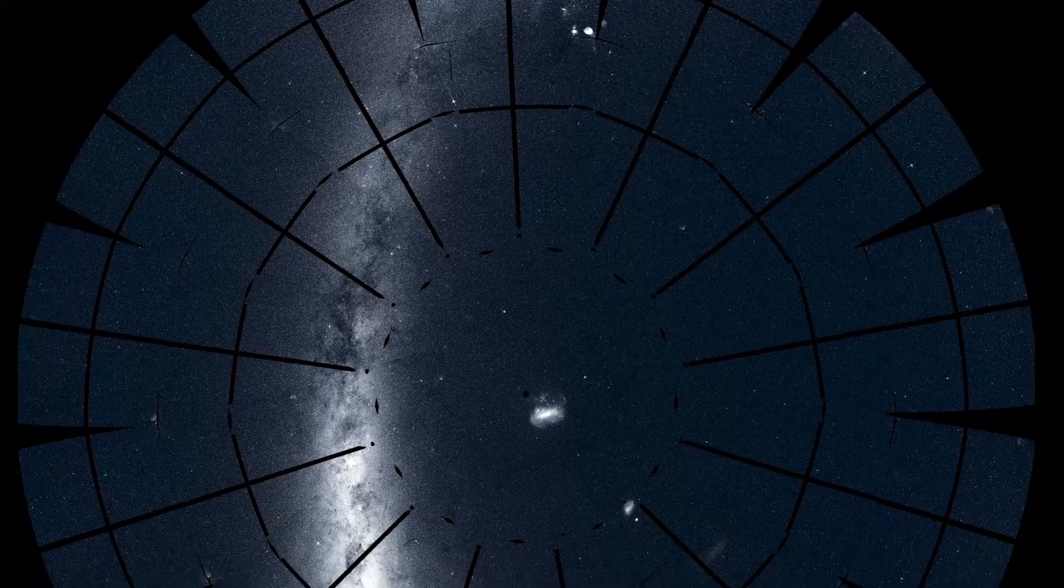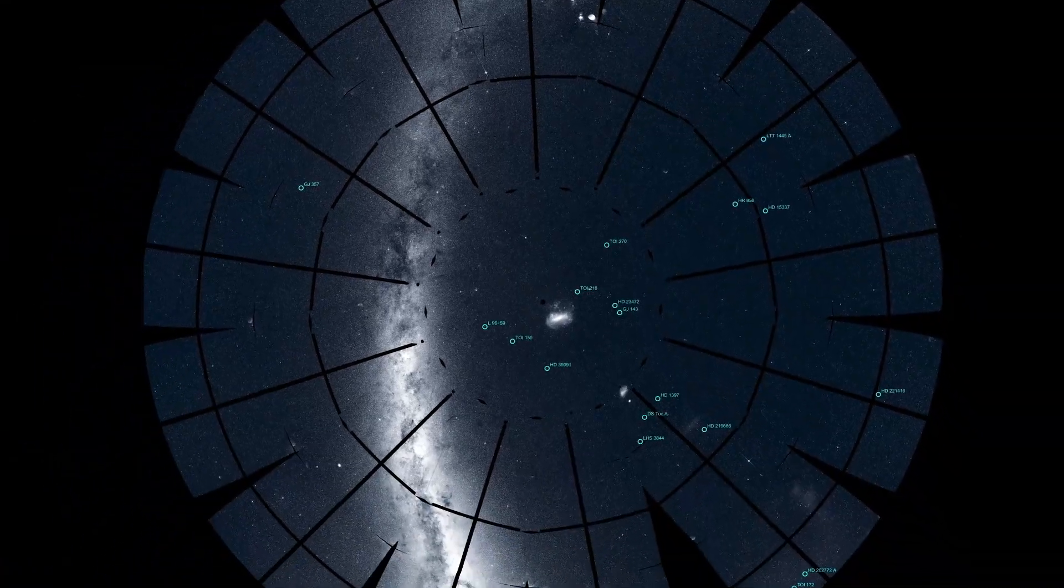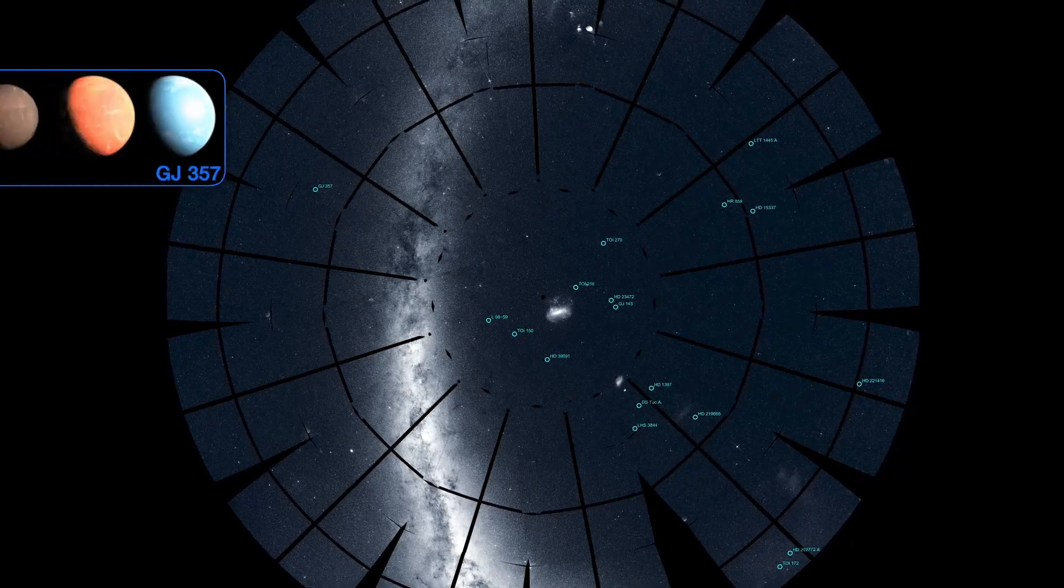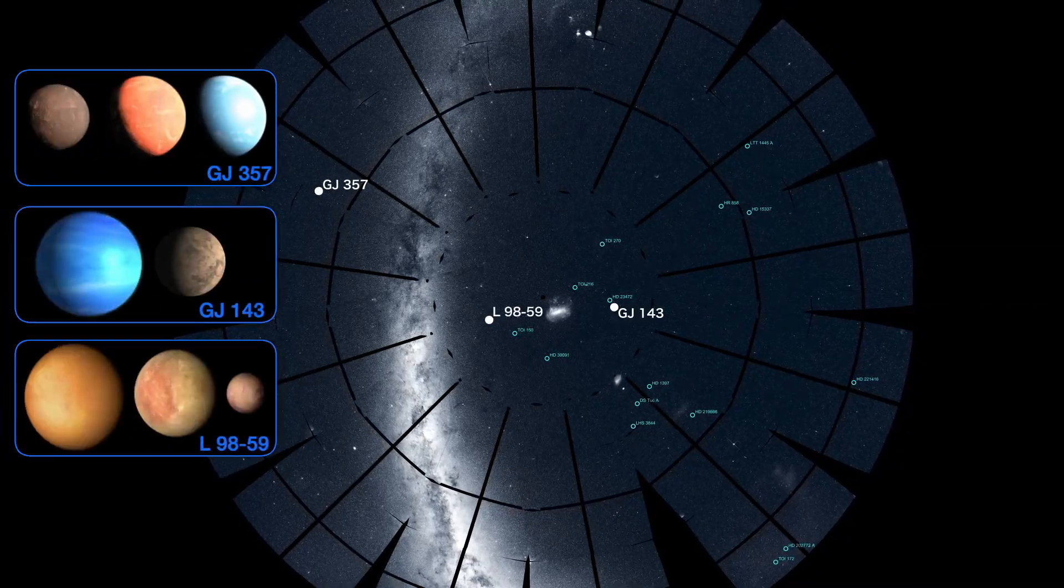TESS's confirmed exoplanet discoveries are currently distributed all around the southern sky. Many of these discoveries are actually multi-planet systems and several are Earth-size.